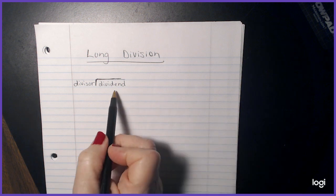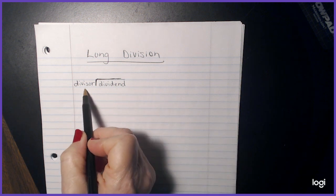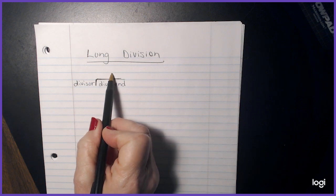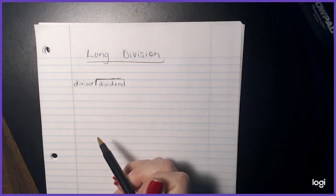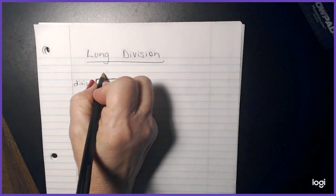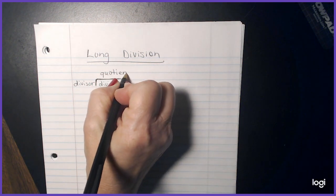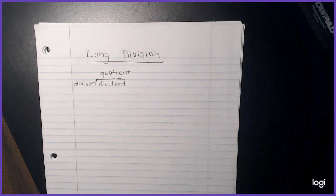Now obviously our job is to take the dividend divided by the divisor and then we can find our answer. And the answer that we find when we divide is called quotient. So go ahead and write down those three terms for me.